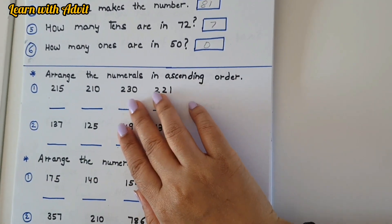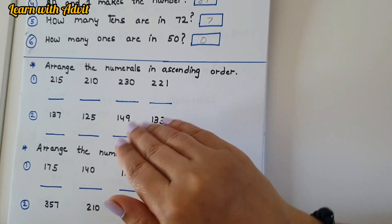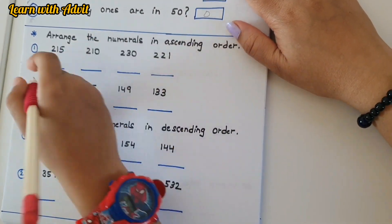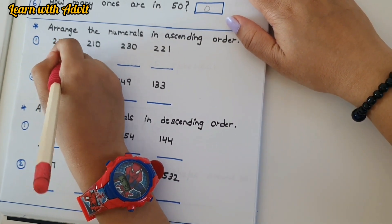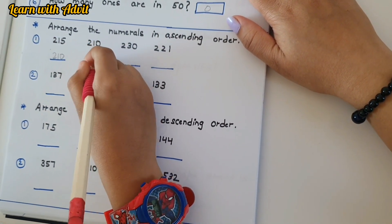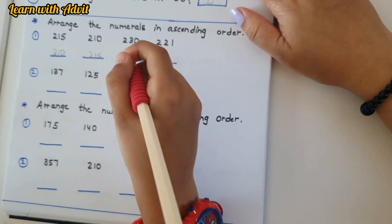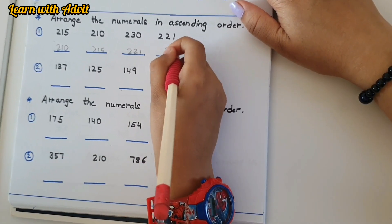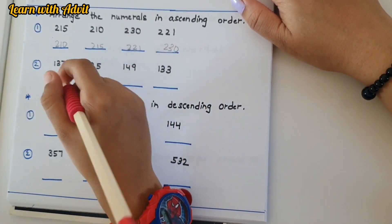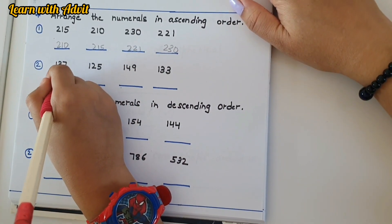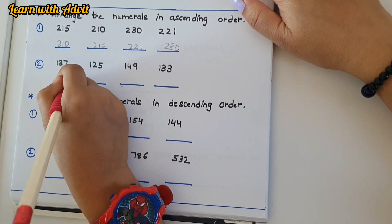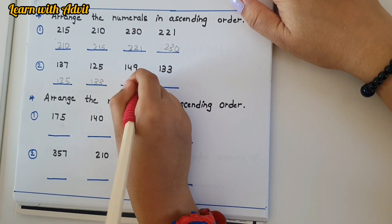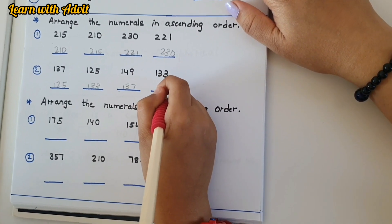Arrange the numbers in ascending order — ascending means small to big. Come on: 210, then 215, then 221, then 230 — very good! The next one: which is the smallest? 125. Then 130, 133, 137, 149 — good job!